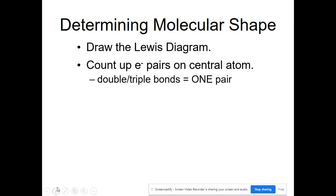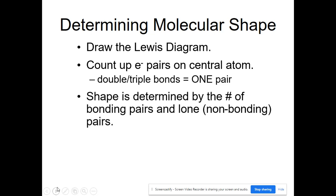Next, count up the electron pairs on the central atom — remember that double and triple bonds count as one pair. The shape is determined by the number of bonding pairs and the number of lone pairs, and we only look at lone pairs on the central atom.